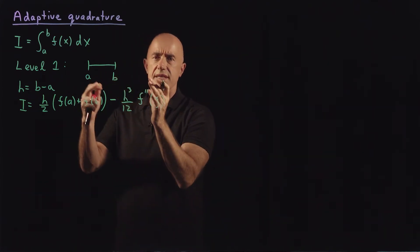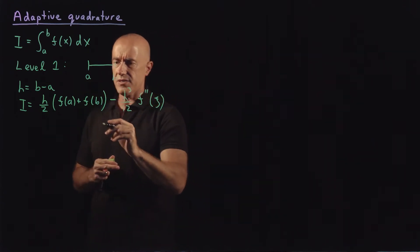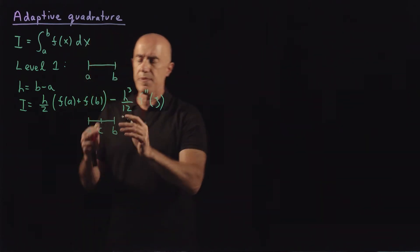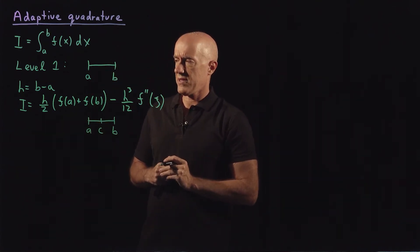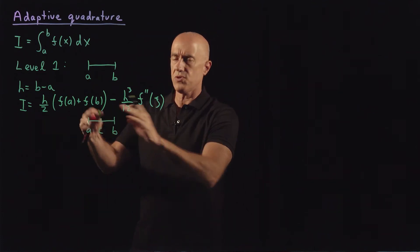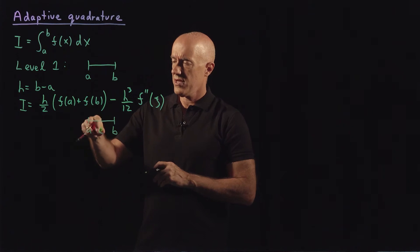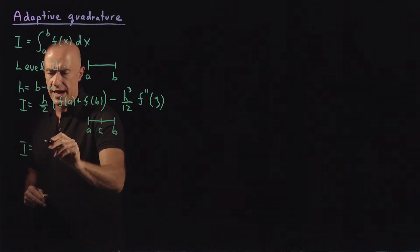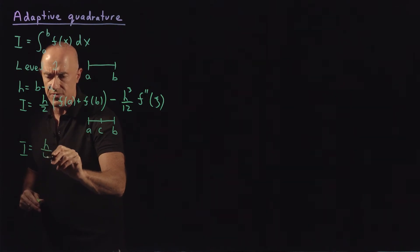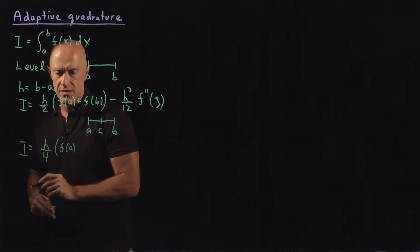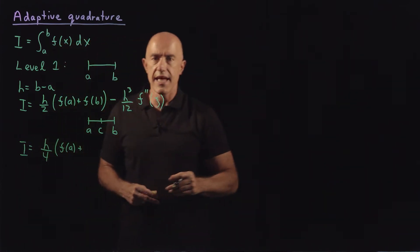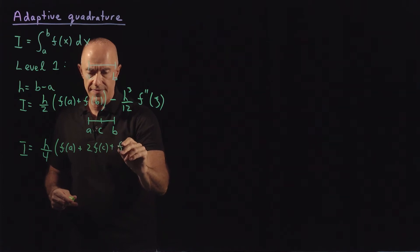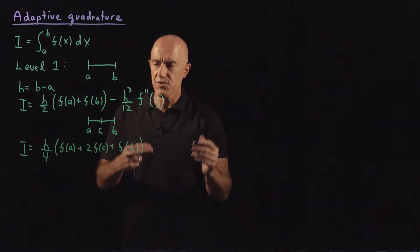Still at level one, we want to compare this integral from a to b to something else. What we do is we compare it from a to c to b. So we place a point c in the middle of the interval and try to compute now using the two elementary trapezoidal rules to compute the integral from a to b.